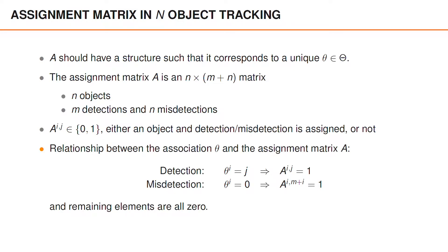The relationship between the association and the assignment matrix is that if we have a detection, then theta_i is equal to j, and the element in A on row i and column j is equal to 1. And if we have a misdetection, then theta_i is equal to 0, and the element in A on row i and column m plus j is equal to 1. All of the remaining elements in the assignment matrix are 0.